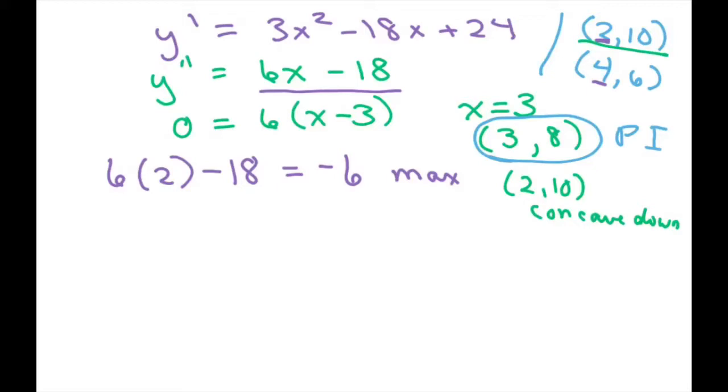Now let's plug in our 4 and see what's going on at this critical point. You plug in the 4 in the second derivative, and that gives you 6. Since 6 is positive, that means you have a minimum, and the curve therefore is concave up.